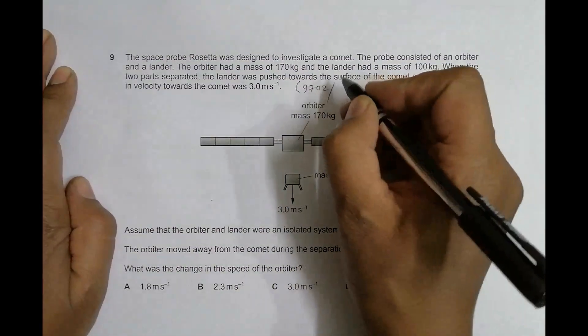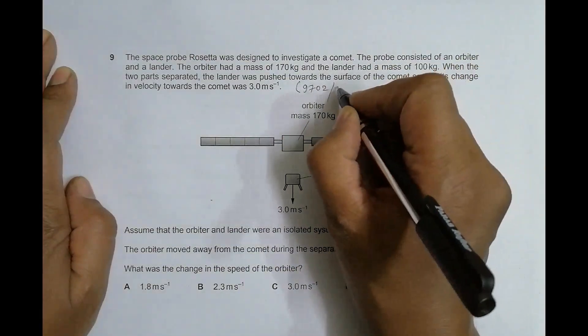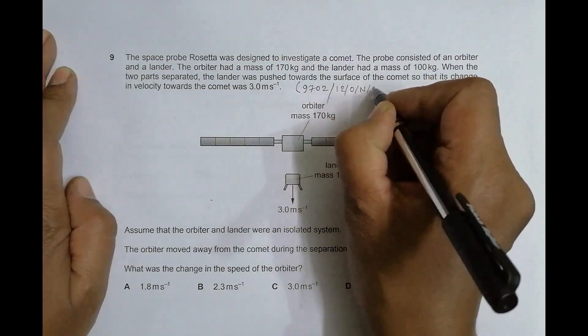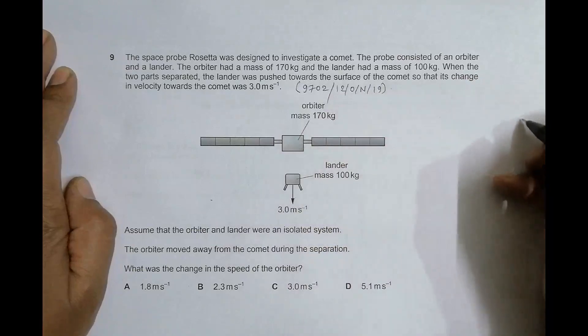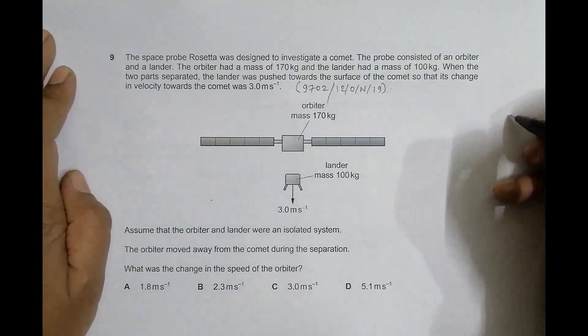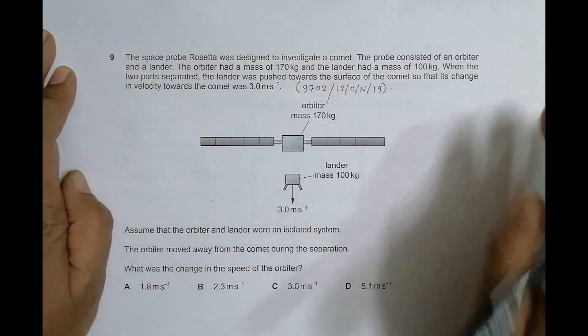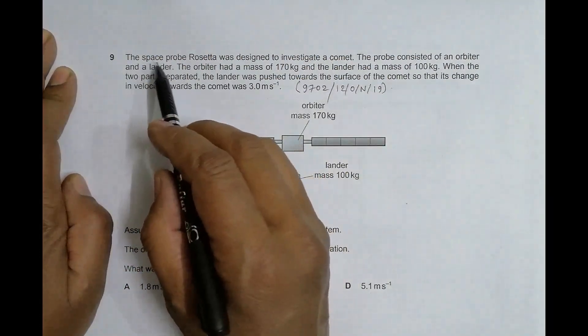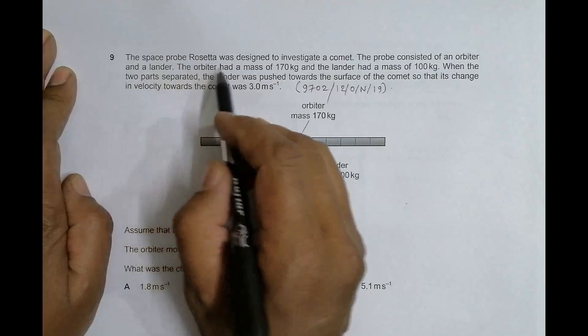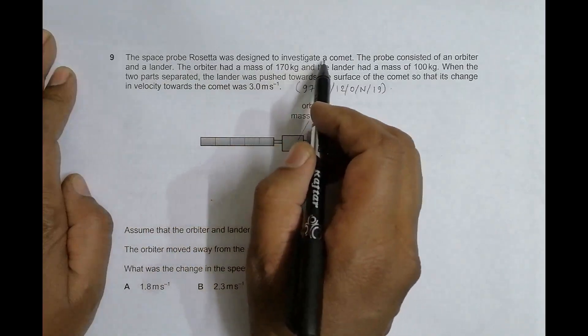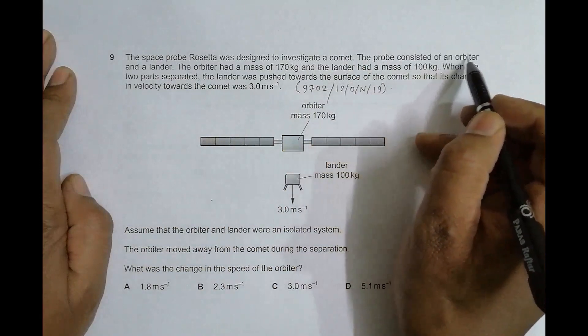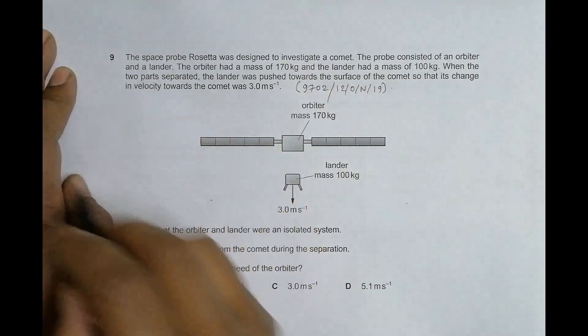Hello folks, this question belongs to 2019 October November paper 1 2, question number 9. This question is concerned with the chapter dynamics, it's about conservation of momentum. The space probe Rosetta was designed to investigate a comet. The probe consisted of an orbiter and a lander.